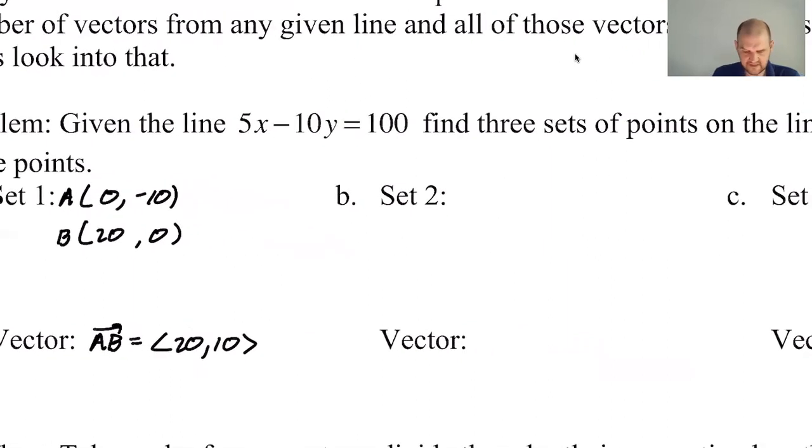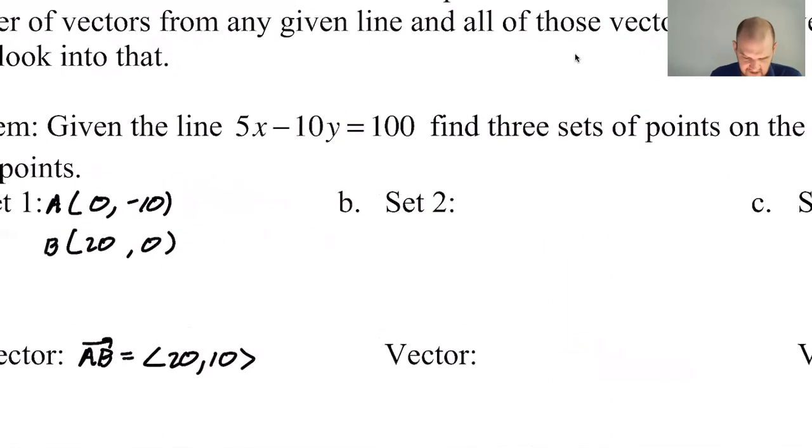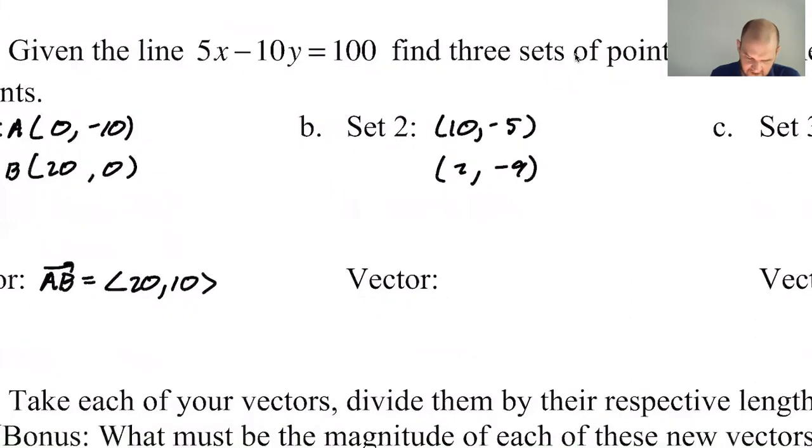What's another thing we can do? If x is 10, then y has to be negative 5, and that would give me 50 plus 50, so 100. I'm not going to reuse zero, negative 10 again. That seems lame. I'll use x is 2, and then y has to be negative 9. I'm going to call this a and call this b, and get the vector AB again.